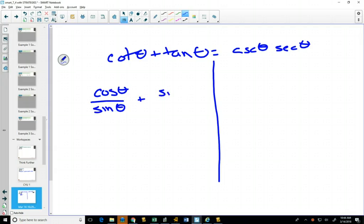Cotangent is cos over sine. Tangent is sine over cos. Cosecant is 1 over sine. Secant is 1 over cos. And if I change everything to sine and cos, the next thing I'm going to do is say, can I write everything as a single fraction? Single fraction on the left-hand side, single fraction on the right-hand side.